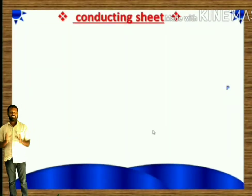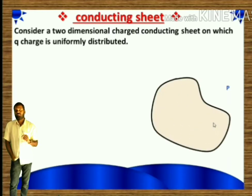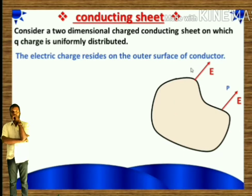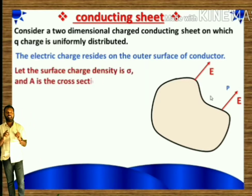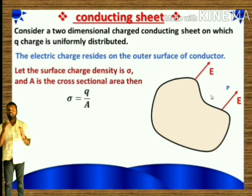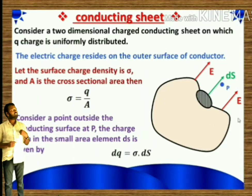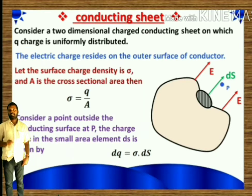Next, how to find the electric field intensity due to a conducting sheet. Consider a two-dimensional charged conducting sheet on which charge Q is uniformly distributed. Since it is a conducting sheet, the electric field always resides on the outer surface of the conductor — inside the conductor, the electric field is zero. Let the surface charge density be sigma and the area of cross section be A, so sigma = Q/A. The charge within small area dS is dQ = sigma·dS.